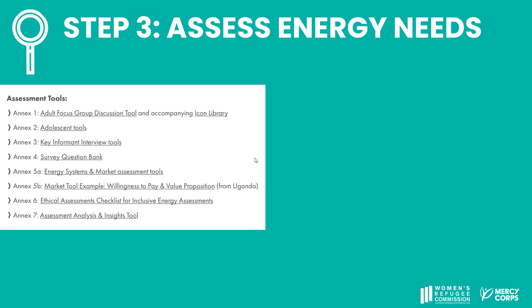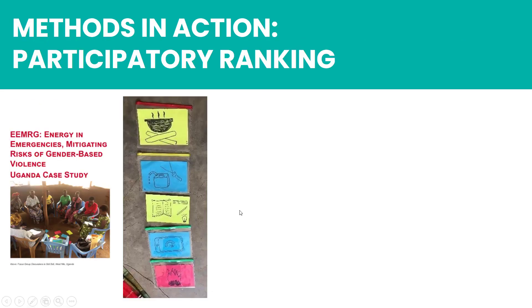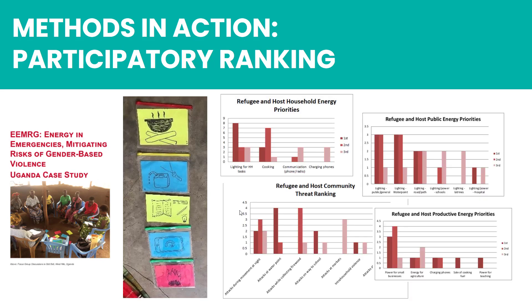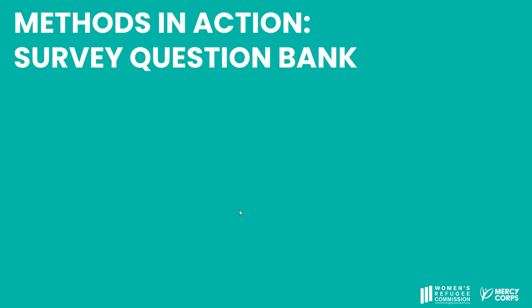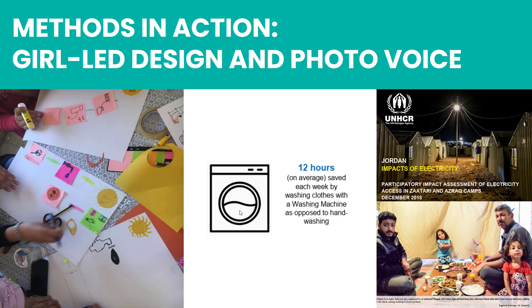All these tools are available in an annex of the Inclusive Energy Access Handbook. The focus group discussion tool uses participatory ranking methodology that stimulates discussion of energy needs among a group and asks them to rank both energy needs and risks faced by the community. Pictured here are some of the image cards we used in focus group discussions in Uganda. This tool helps you come up with ranked priorities and risks by population segment, which is really useful for inclusive program design. The survey bank includes questions that can be embedded into traditional household surveys while unpacking distinct energy needs by identity. The girl-led design tools empower girls to lead research and assessment processes, while PhotoVoice puts affected community members in a documentary role, enabling them to tell the story of their energy needs from their own vantage point through photo and video.